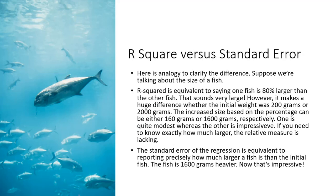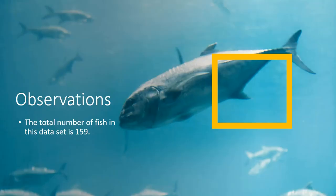So what is the difference between the R square statistic and the standard error statistic? Let's use the analogy of the fish to help clarify the difference. The R squared statistic is equivalent to saying one fish is 80% larger than the other fish. Now that sounds like that's very large. However, it makes a big difference whether the initial weight was 200 grams or 2000 grams. The increased size based on the percentage can be either 160 grams or 1600 grams respectively. One is quite modest whereas the other is quite impressive. If you need to know exactly how much larger the relative measure is lacking. The standard error of the regression is equivalent to reporting precisely how much larger a fish is than the initial fish. The fish is 1600 grams heavier. Now that's impressive. In our data set, we have 159 total fish.